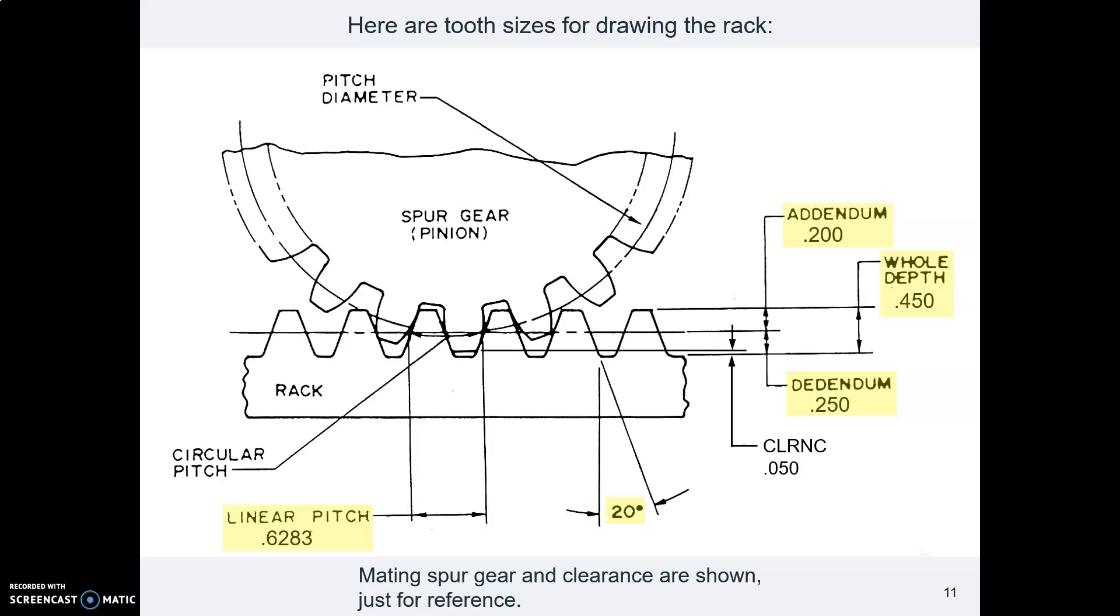Here's the pitch line with the addendum. Here is this drawing that we saw earlier in the slides where I've added in the numbers that you will use to draw your rack. Here is the 20 degree angle. So notice that is 20 degrees off of vertical. Here's the pitch line with the addendum and the dedendum, and added together those make the whole depth.